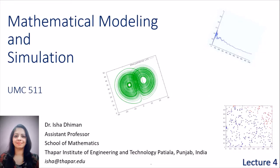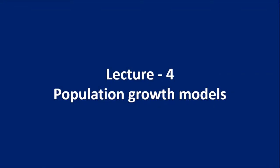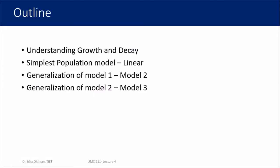Welcome to lecture 4 of Mathematical Modeling and Simulation. In this lecture we are going to look at a very important class of models known as population growth models. We'll be understanding two terms — growth and decay — then I'll give the example of the simplest possible population model, which is a linear one called Model 1, then a generalization to Model 2, and a further generalization to Model 3.